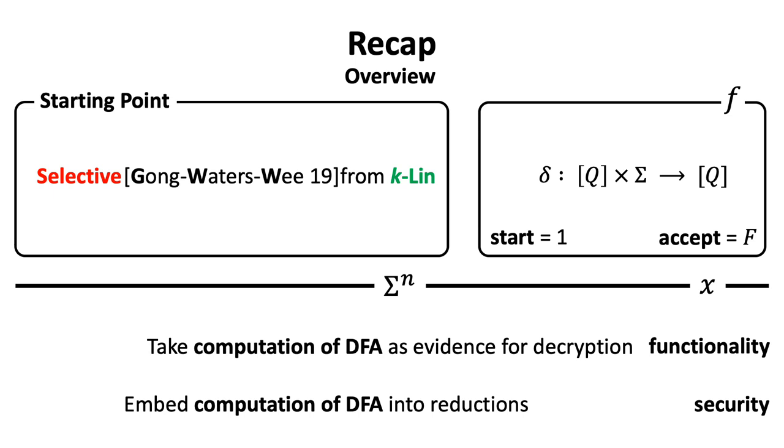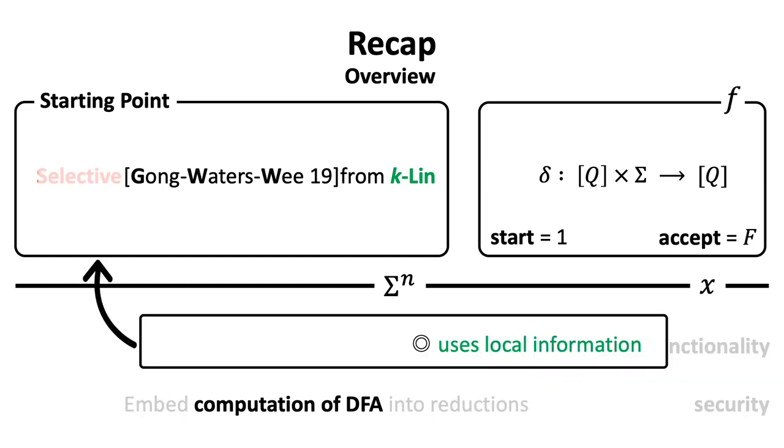For the security, they embed computation of DFA in the reduction. This is also like Waters' proof based on the q-type assumption. But the crucial point here is only local information of computation is required for each reduction. This allows them to finish the proof with simpler k-linear assumption. In comparison, Waters' proof embedded all the information into the reduction where the complex q-type assumption comes in.